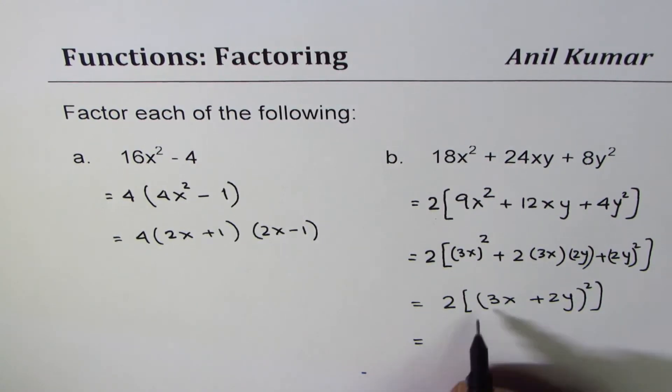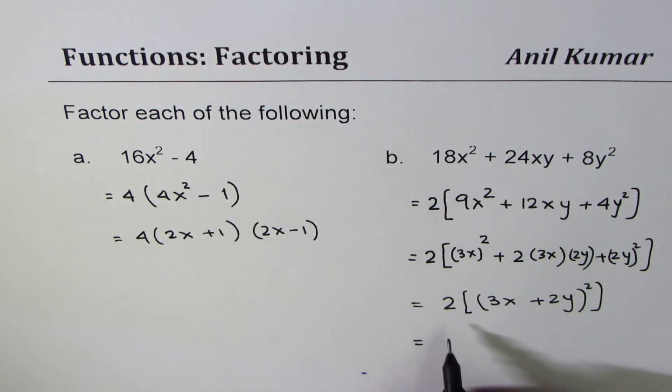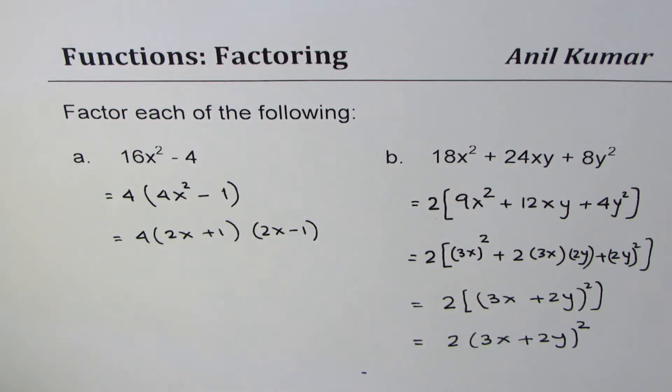Do you understand? So we could write the second trinomial as 2(3x + 2y)². I hope the steps are absolutely clear.